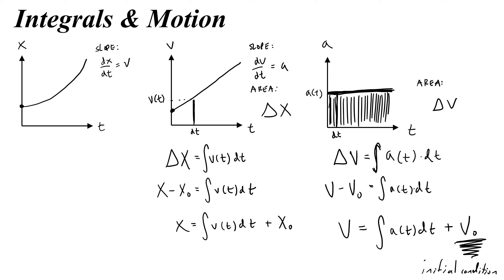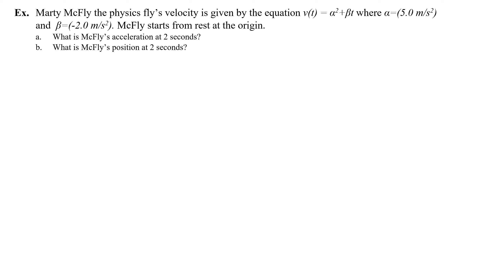Let's do a concrete example. Marty McFly's velocity is given by v equals alpha t squared plus beta t, where alpha is 5 meters per second cubed and beta is negative 2 meters per second squared. McFly starts from rest and at the origin. Part a: What is McFly's acceleration at 2 seconds? Part b: What is McFly's position at 2 seconds?